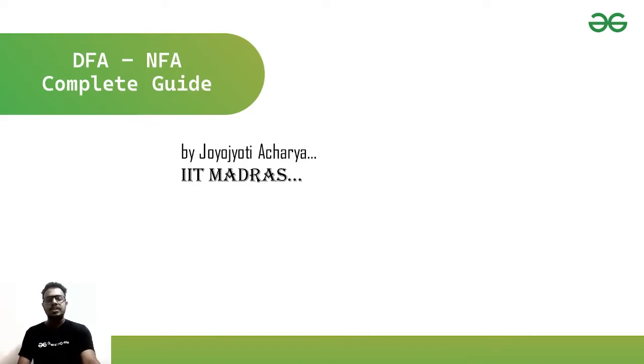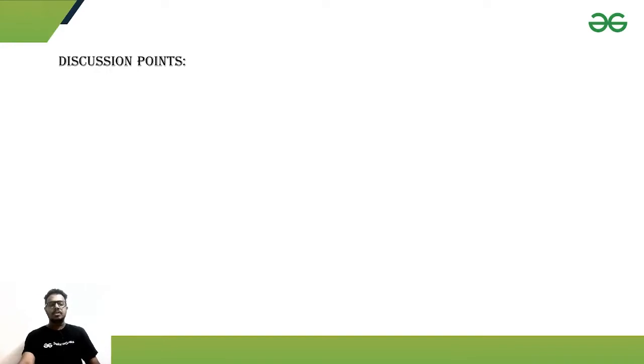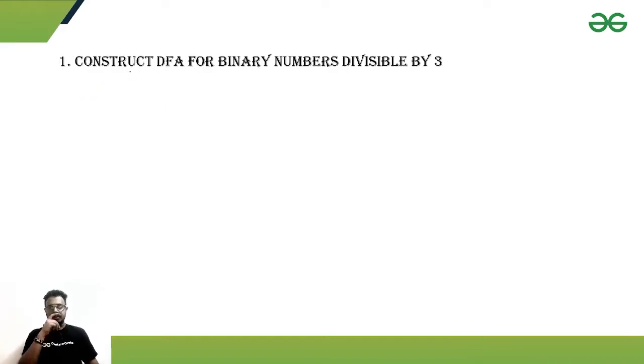Let's get into the problem. Our discussion point is: construct a DFA for binary numbers which are divisible by three. This is our discussion point, so here we will be discussing about a binary number which will be divisible by three.